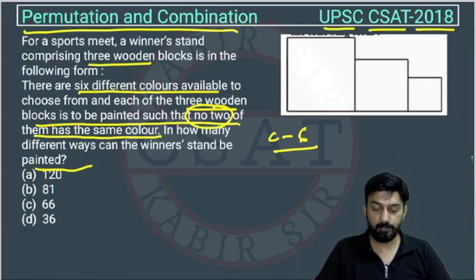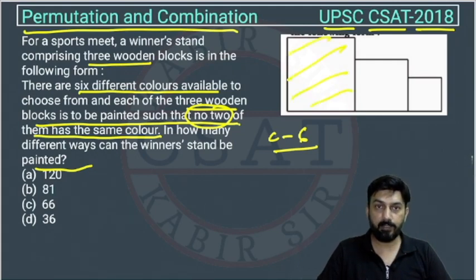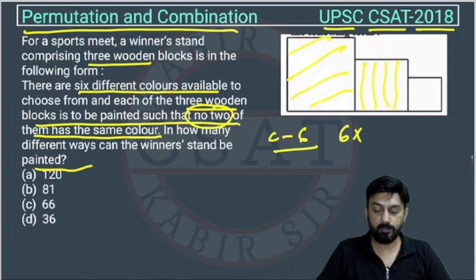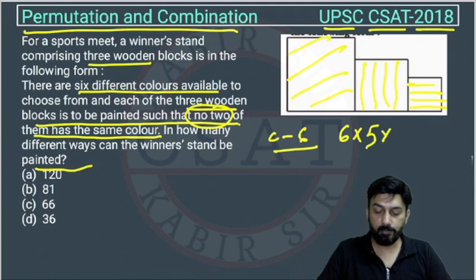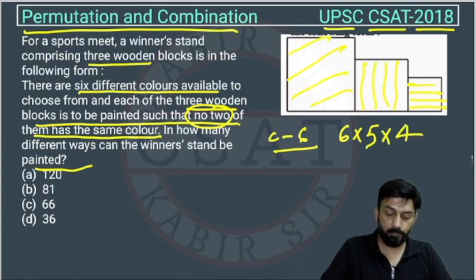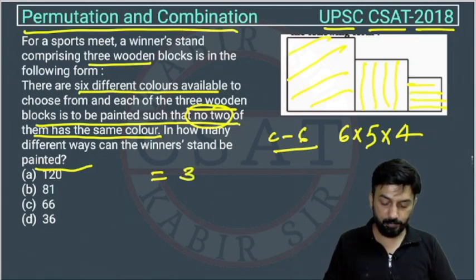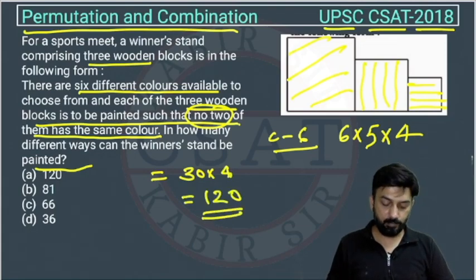Suppose this first block — it can be painted in how many ways? We have six colors, so we can paint it with any color, so this will be 6. The second block can be painted in how many ways? We are remaining with five colors because one color is already used, so this will be 5. Now we are remaining with four colors because two colors are already used, so this block can be painted in 4 ways. Total number of ways = 6 × 5 × 4 = 30 × 4 = 120. So the answer is option A.